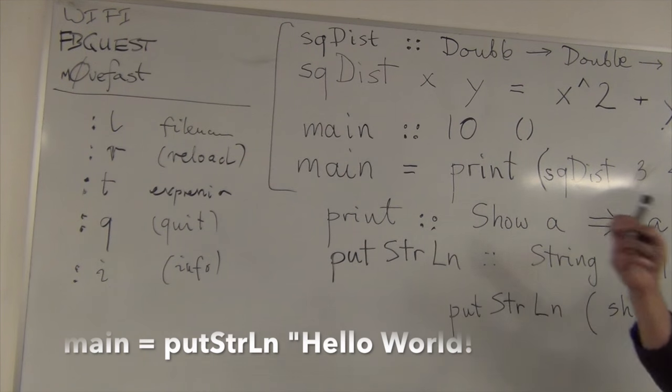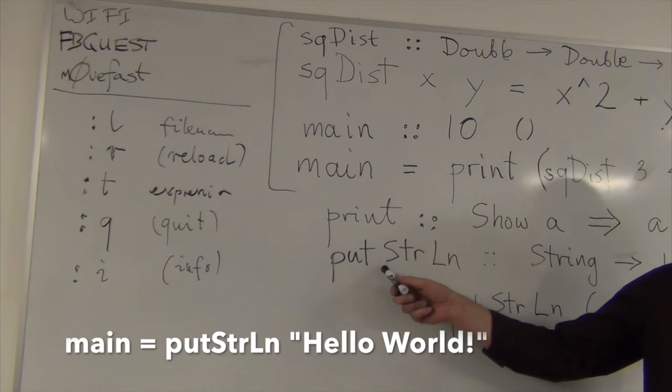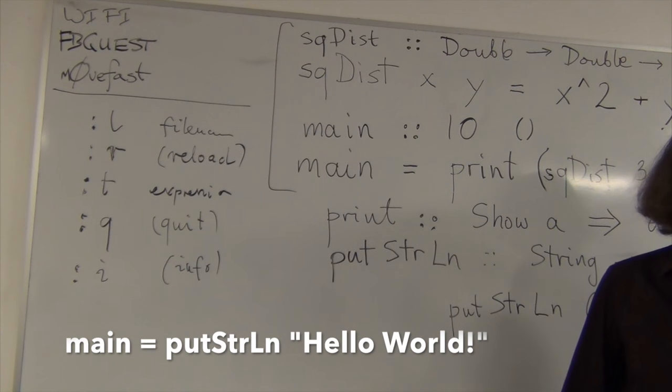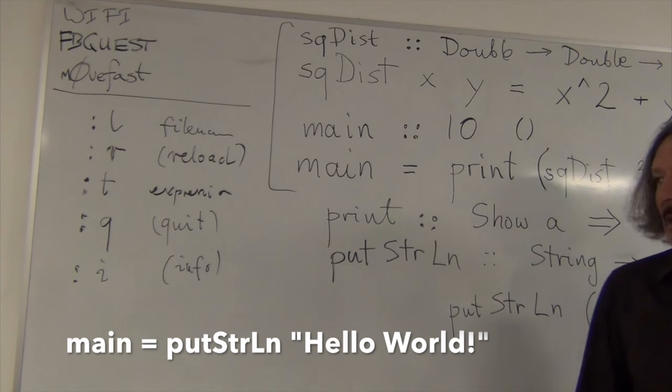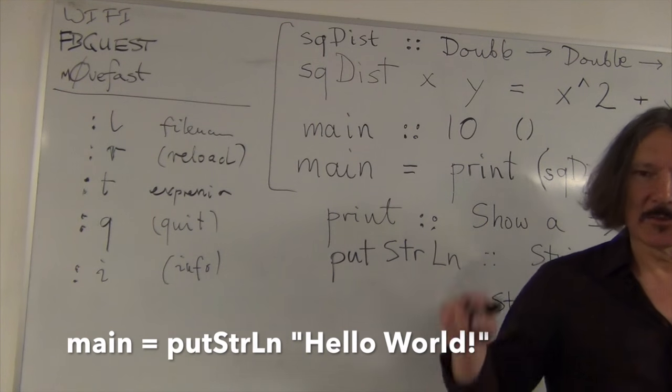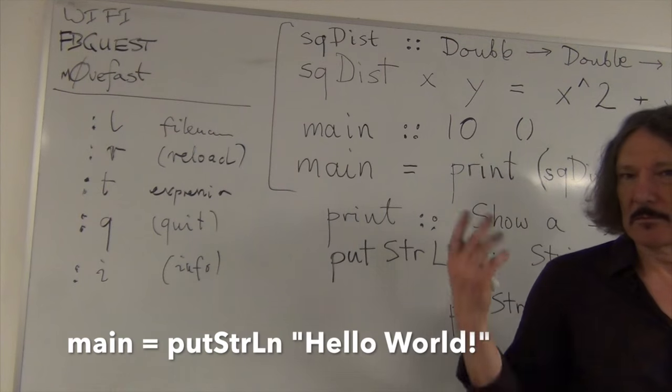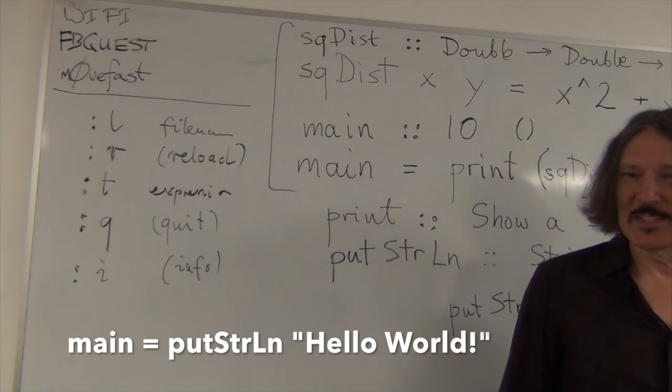because we don't know any more functions that return IO, right? We only know print and put strline. So, I propose that we use this one, put strline, right? Since we are printing a string, there's no need for anything else. Okay. So, we say put strline, and we would pass it a string with quotation marks, Hello World. And that's it. But you see, in order to get into Hello World,